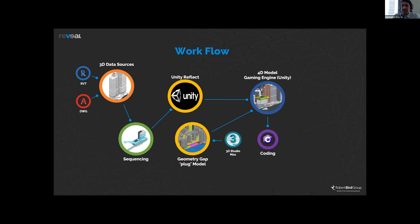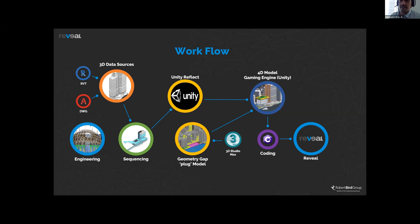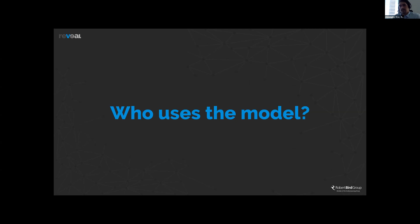Then we have the development team — our engineering and technology department — who has created the code to actually build Reveal. One very important thing: Reveal and 4D sequencing is done in two manners. A lot of the time, it's done at concept with the engineers of Robert Burr Group, who are staging the structural analysis. With that structural analysis, we can have links to the actual Revit models and provided models. The full sequence of engineering analysis is taken through into Reveal. So Reveal is not just a pretty picture — it's also been analyzed. And there are times when we come on board just working with a contractor who's already come up with a methodology.